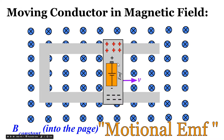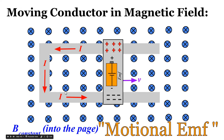If we place this moving conductor on a set of conducting rails so that it slides to the right, we basically provide a pathway from the positive side of something acting like a battery to the negative side, and we essentially get current flow. We have a loop of wire that's increasing in surface area, and there's an induced current inside of that loop of wire.